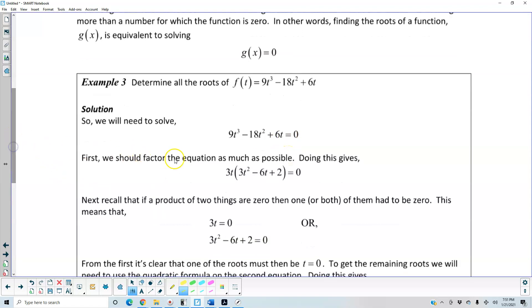Now the first thing we want to do is we should factor the equation as much as possible. So what can we factor out of all three terms? Well the greatest factor that we can factor out is 3t. So if we factor out 3t, what's left is 3t² - 6t + 2 which is equal to zero.